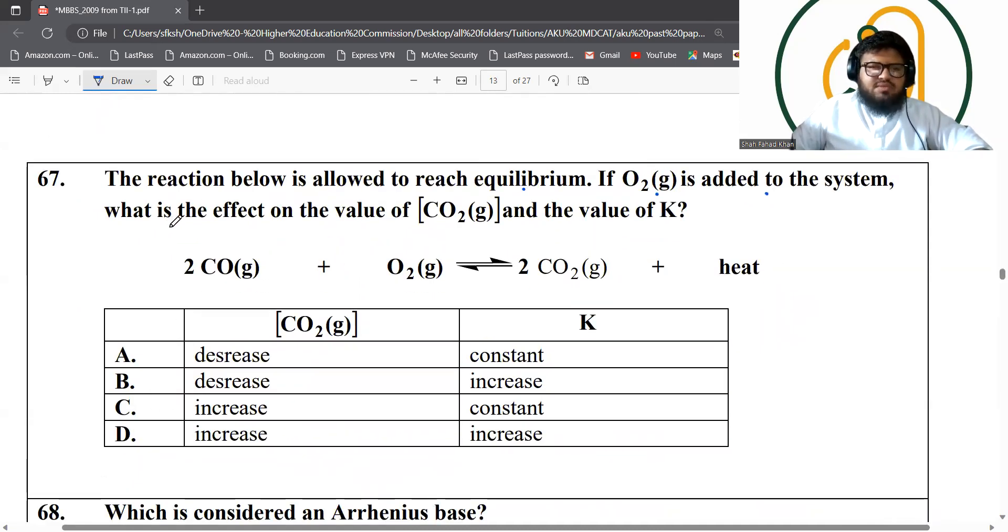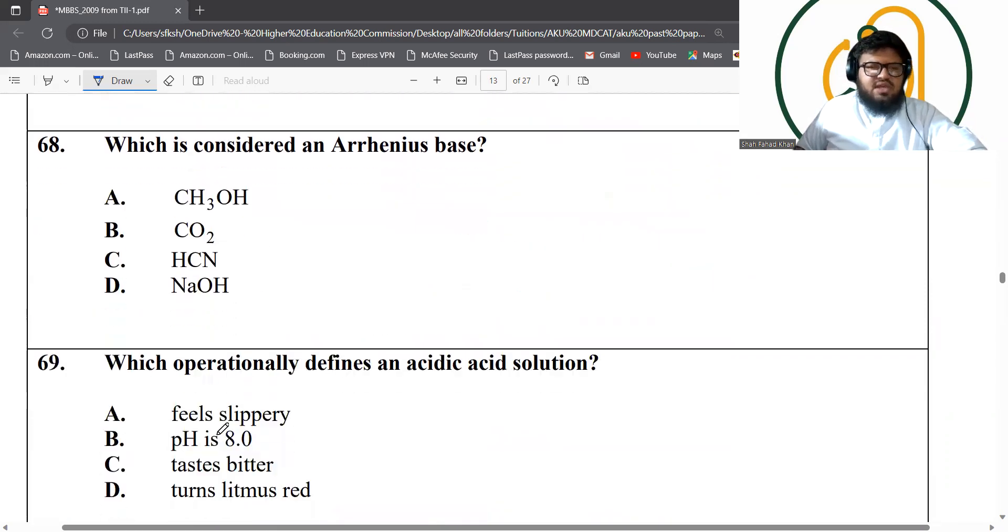Then next question 67. The reaction below is allowed to reach equilibrium. If oxygen is added to the system, what is the effect on the value of carbon dioxide concentration and the value of K? Remember, the value of K only changes by the changes in temperature and does not have any effect based on the changes in the concentration. So K has to stay constant. But what about these two? If I increase oxygen here, it's going to react with carbon monoxide, shift the equilibrium to the right and increase the carbon dioxide. Carbon dioxide will increase.